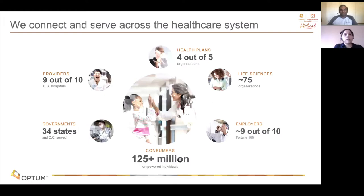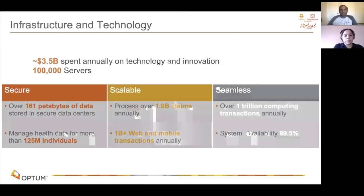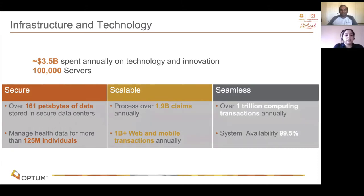Across Optum, we are able to serve many constituents of the health system, and we are grateful to serve and partner with 9 out of the 10 Fortune 100 companies, 9 out of the 10 US hospitals, and serve 125 million consumers. From an infrastructure and technology perspective, we have an annual spend of about $3.5 billion on technology and innovation. 99% of our workloads run in our own data center with over 1 trillion transactions annually, ranging from mainframe, big data, accelerators, distributed SQL, containers, and now with a serverless ecosystem.